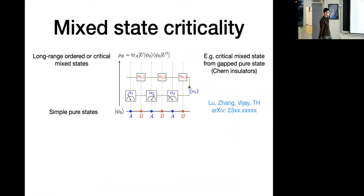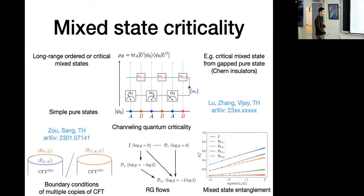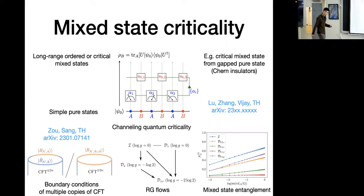Let me conclude with a summary. In the first part, I showed how measurement feedback gives rise to non-local quantum channels that convert simple pure states into long-range or critical mixed states — one interesting example being a gapped pure-state Chern insulator yielding a critical mixed state on the resulting spin system. In the second part, we understood the effects of local noise on quantum critical points: we mapped channels to boundary conditions of CFT, which allows us to compute RG flows for the channels, helping us understand the entanglement structure of the resulting mixed states. I hope I've convinced you that noise and mixing things up is not always a bad thing and can actually enrich the physics. Thanks for your attention.